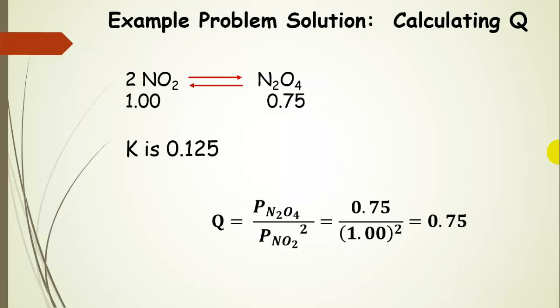So what do we do? Well, the first thing we're going to do is calculate Q. So we have one atmosphere of nitrogen dioxide. So we're going to plug that into our Q expression, which, remember,